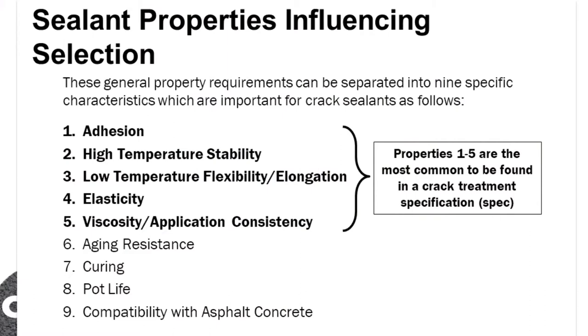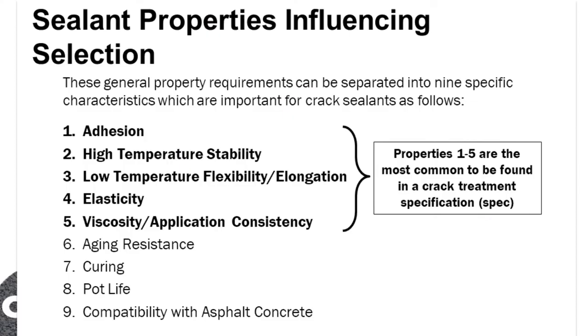There are five or six different properties and characteristics of sealant that make up crack sealant. We're going to talk about five of them — the ones we normally look at to determine how that sealant is going to perform on your streets. The first one is adhesion, then there's high temperature stability which is softening point, low temperature flexibility or elongation, elasticity, and viscosity.